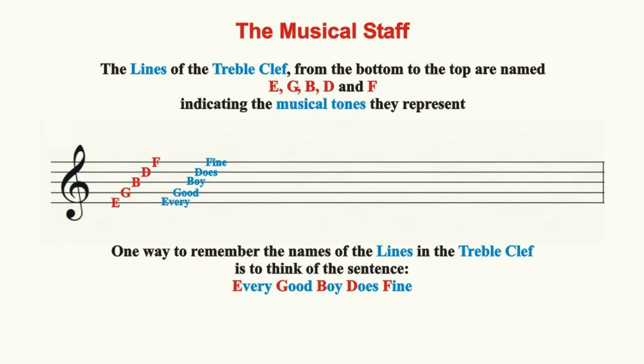The lines of the staff in the treble clef from the bottom to the top are named E, G, B, D, and F. From the bottom to the top, each line represents the name of a specific tone. One way of remembering the names of the staff lines in the treble clef is to use the phrase: Every good boy does fine. From the bottom to the top line, each tone sounds like...